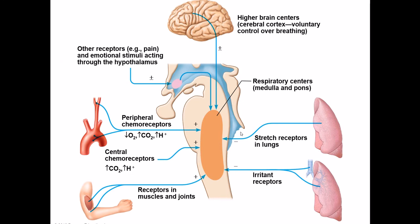Looking at all of this together: higher brain centers like the cerebral cortex and hypothalamus can exert control on the brainstem respiratory centers. We have a ventral group, a dorsal group, and one group in the pons. The hypothalamus acting through pain or emotion can change respiratory rate. Irritant receptors cause constriction of bronchioles. Stretch receptors via the inflation reflex signal when the lungs are inflated and it's time to begin exhalation. But again, primarily it's the chemical factors — pH and CO2 in particular — that really determine our respiratory rate and rhythm.